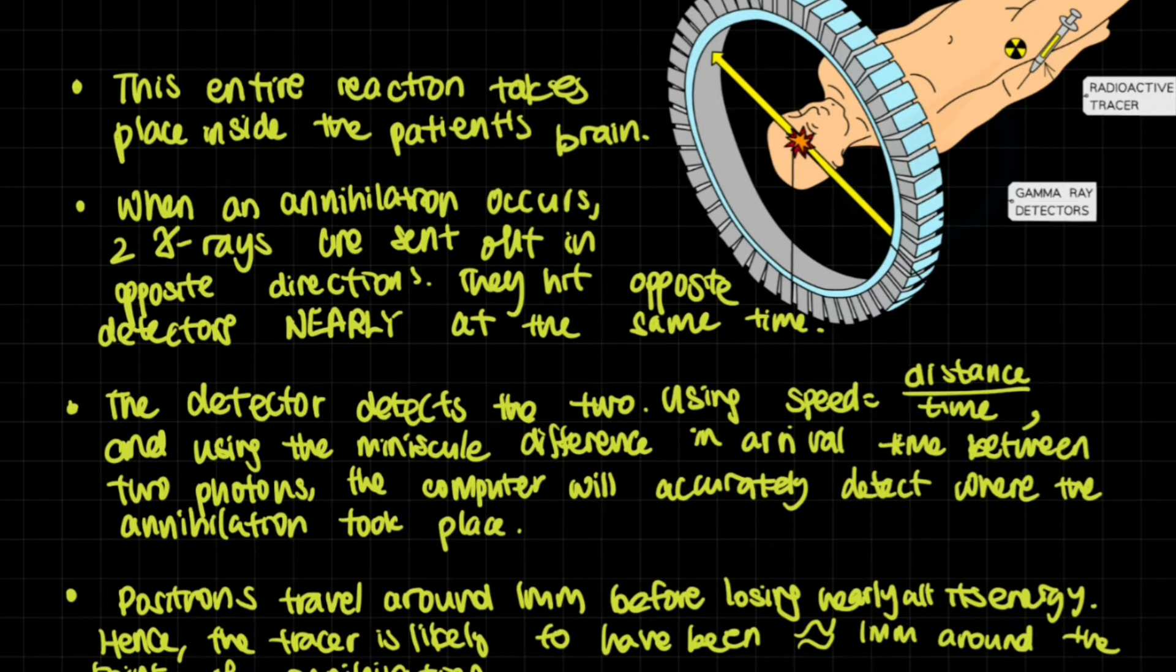Well, this entire reaction takes place inside the patient's brain, or wherever else there is a cancer cell. But let's say that this is like a brain scan. The patient is actually inside this ring of gamma ray detectors, and they're all segmented. They're all separate gamma ray detectors. When an annihilation occurs, two gamma rays are sent out in opposite direction. They hit opposite detectors nearly at the same time, but not exactly.